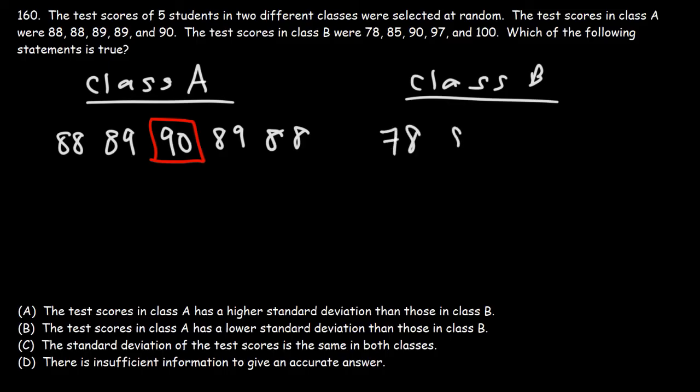Class B has the scores 78, 85, 90, 97, and 100. If you add up those five values and divide them by 5, you'll find that the mean is also 90.